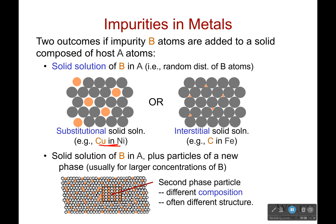The second option would be an interstitial, where the atoms are so small they're actually able to fit in the gaps. The substitutional case is just filling in a vacancy, but the interstitial is literally filling in a gap where nothing was supposed to be. Carbon is just so much smaller than iron that it can fit into those gaps. Interstitials are actually less mobile than substitutional impurities, which is why carbon is good at getting into iron.